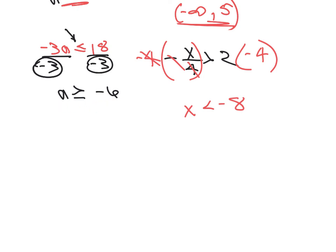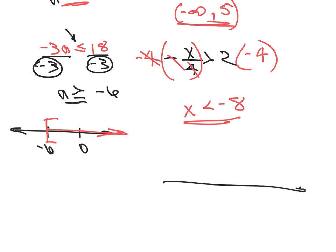That is a huge, huge thing to remember. Let's look at what that would look like graphed. For a is greater than or equal to negative 6, put 0 and negative 6 on the number line, use a square bracket at negative 6, and go to the right. For x is less than negative 8, use a rounded parenthesis at negative 8 because it's not equal to, and draw the arrow to the left.